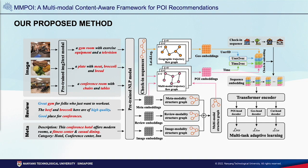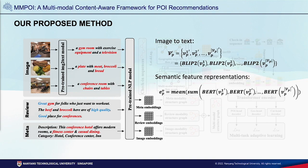To this end, we propose a novel MMPOI model consisting of three main modules. To address the first challenge of different representation spaces between textual and visual modalities, MMPOI employs an image-to-text pre-trained model to convert POI images into natural language descriptions. Subsequently, a unified pre-trained language model is applied to extract features from each modality, thereby mapping multimodal content to a shared semantic representation space.